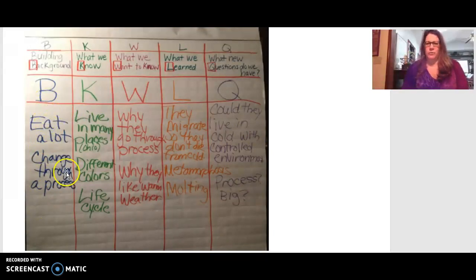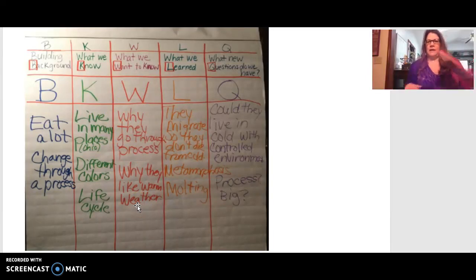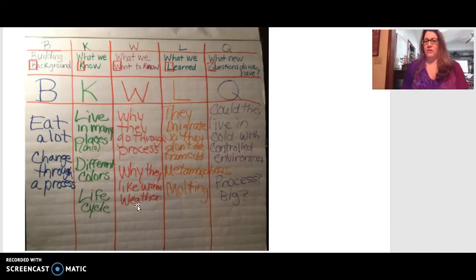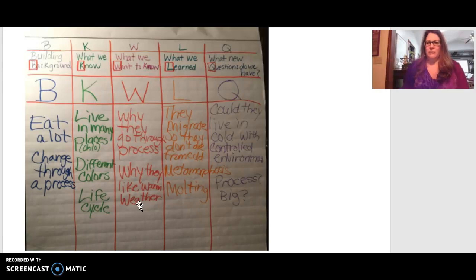We would collect information under B from the video to start the lesson. Then we'd talk about what they know and what they want to know before reading the Monarch Butterfly book by Gail Gibbons. Once we read the book, we'd discuss what they learned, check whether what they wanted to learn was addressed, and correct any misconceptions. The Q column is for new questions students have after reading — sometimes working through a lesson actually generates more questions.